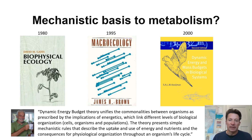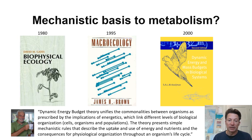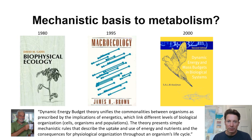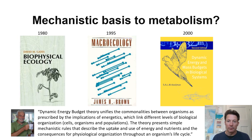In the book, Bas Kooijman says that the aim of this theory is to unify commonalities between organisms as prescribed by the implications of energetics and how this links across multiple levels, and that the theory presents simple mechanistic rules about the uptake and use of energy and nutrients across the whole organism's life cycle. I thought this might be a way to build on what we were doing with the biophysical models. In those models, we had metabolic rate as part of the equations, but we just used an allometric function to get the metabolic rate. I thought this book might provide the theoretical context to actually calculate the metabolic rate from first principles — to become even more mechanistic in how we're characterising the organism and its ability to survive in different environments. This was all happening in about 2002 and was very exciting to me.